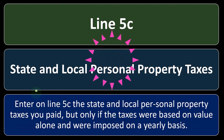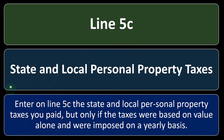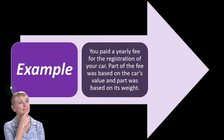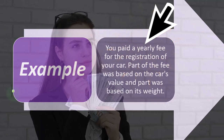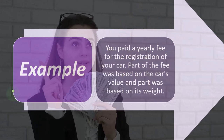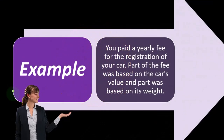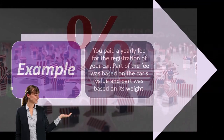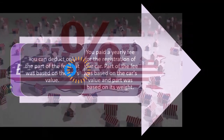Line 5C: state and local personal property taxes. Enter on line 5C the state and local personal property taxes you paid, but only if the taxes were based on value alone and were imposed on a yearly basis. For example, you paid a yearly fee for the registration of your car — part of the fee was based on the car's value and part was based on its weight. So you've got your real estate taxes on your home and then other property like your car, which is the common example. You may be able to deduct part of it, but only the portion based on value.